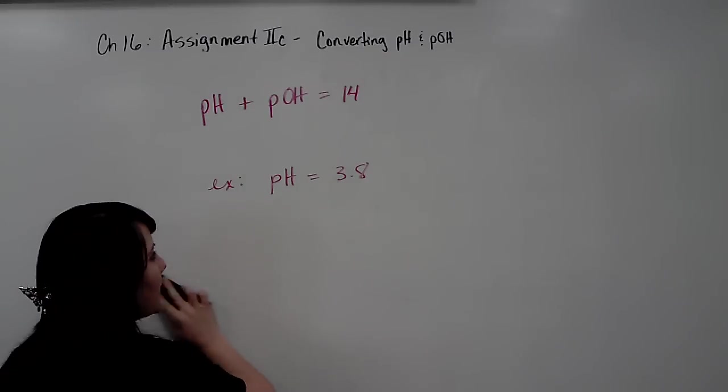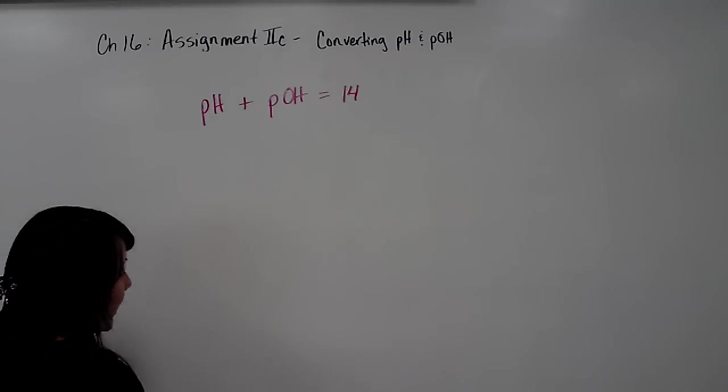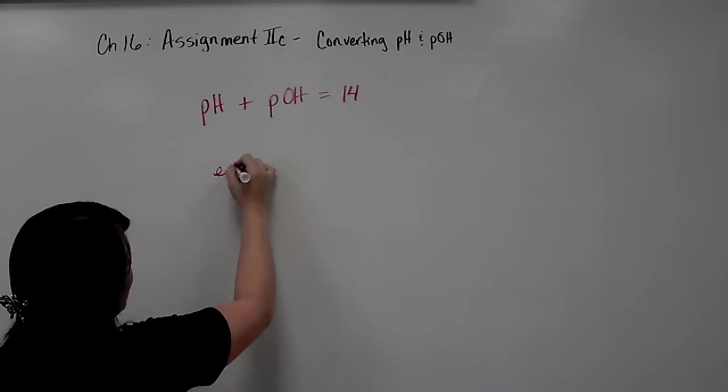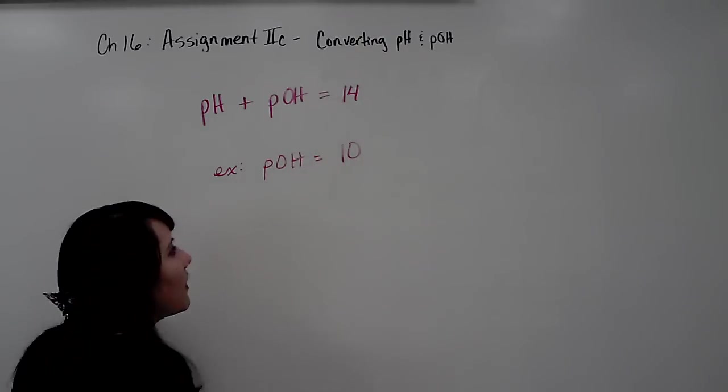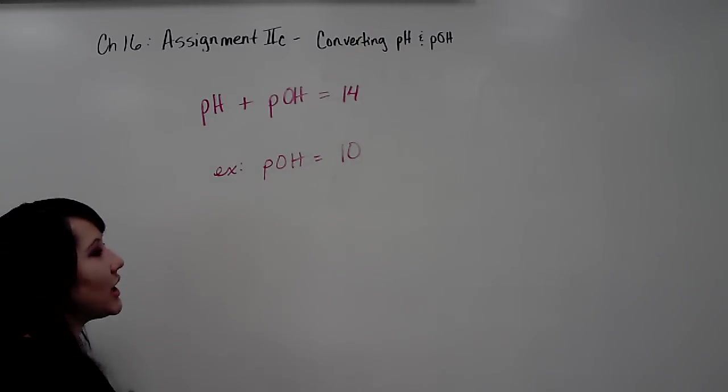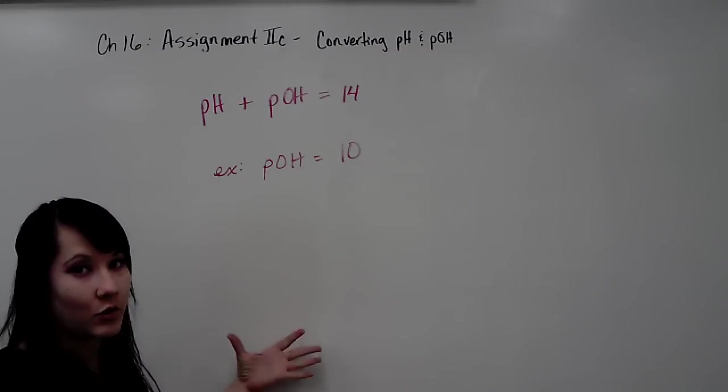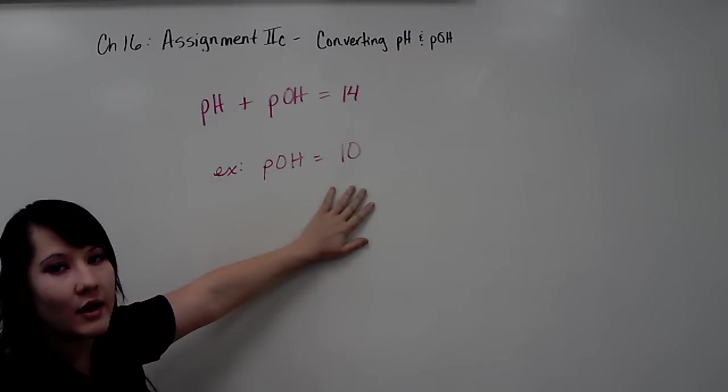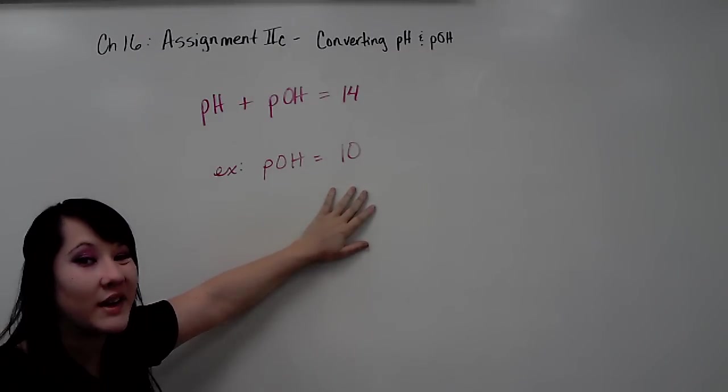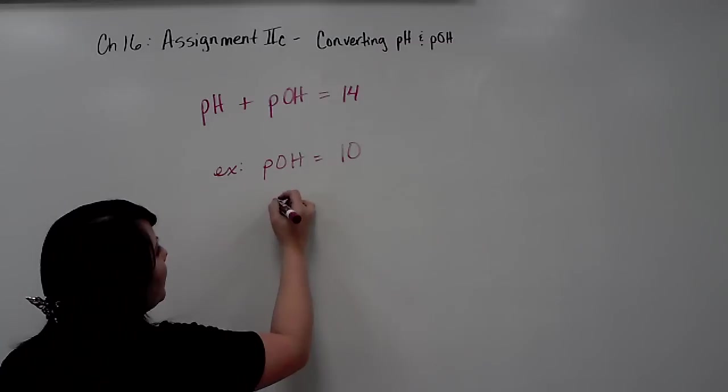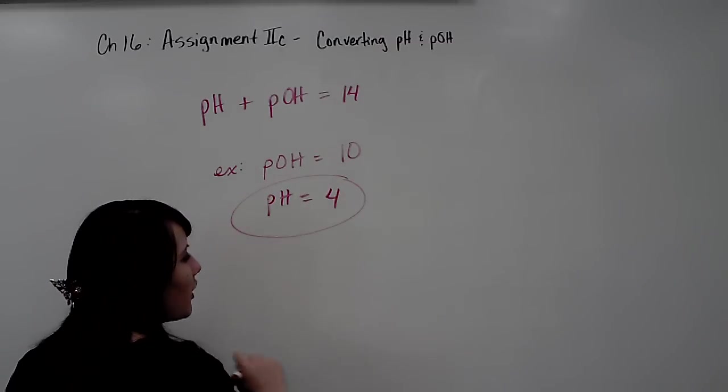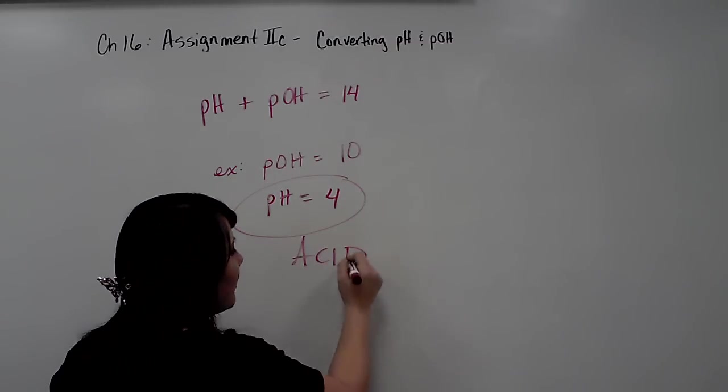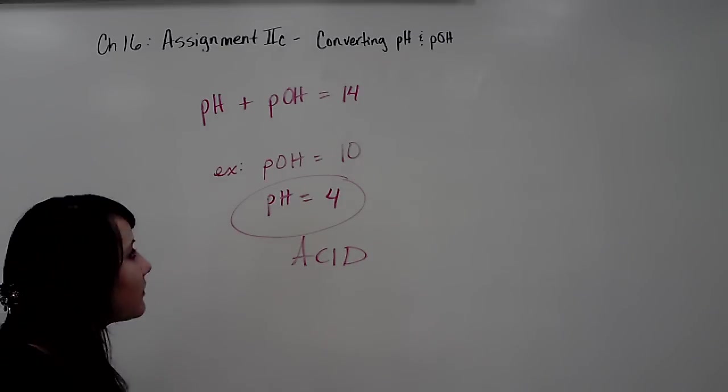It's handy because if you're given the pOH, for example, if your pOH is equal to 10, then you can solve for the pH, and then you can decide if it's an acid or a base. Because right now, you can't compare a pOH to the pH scale. So the pH is equal to 4, and 4 is considered an acid on the pH scale, and then you can turn it into the pOH.